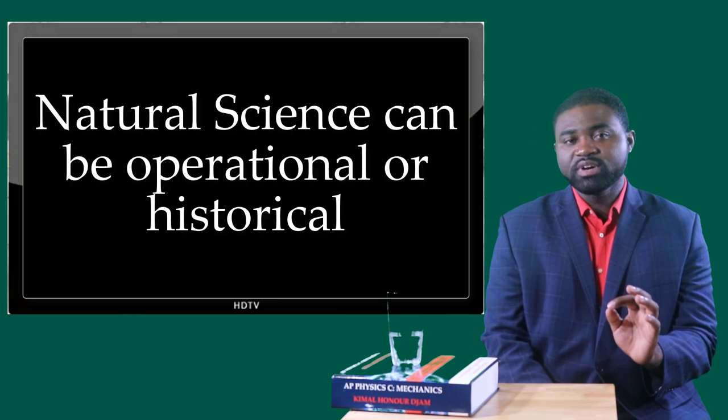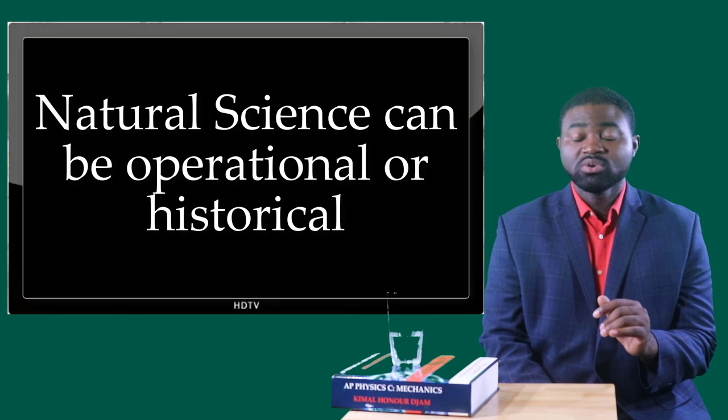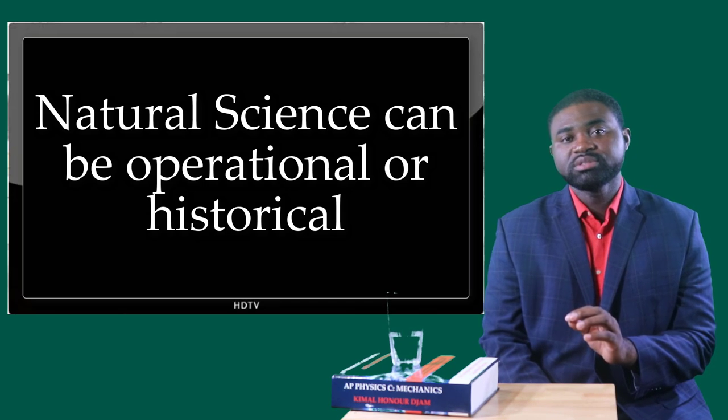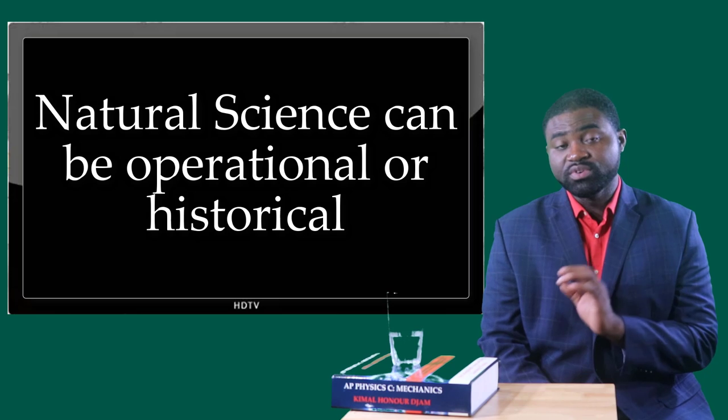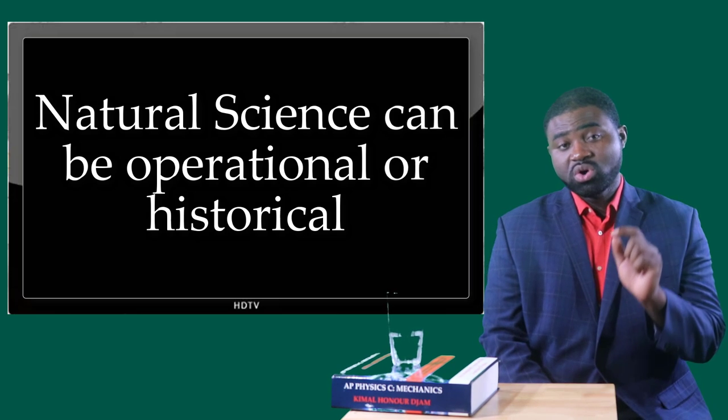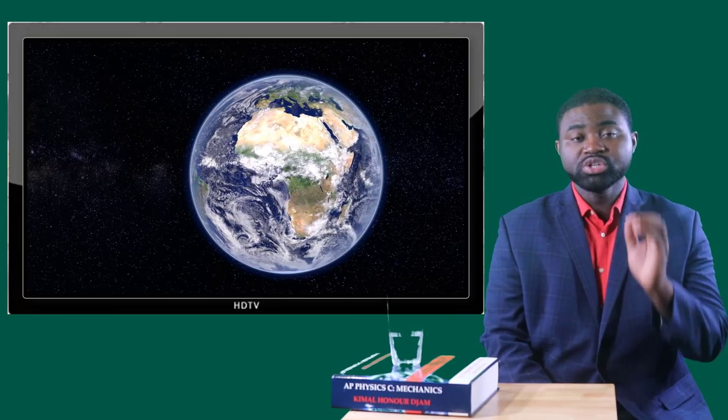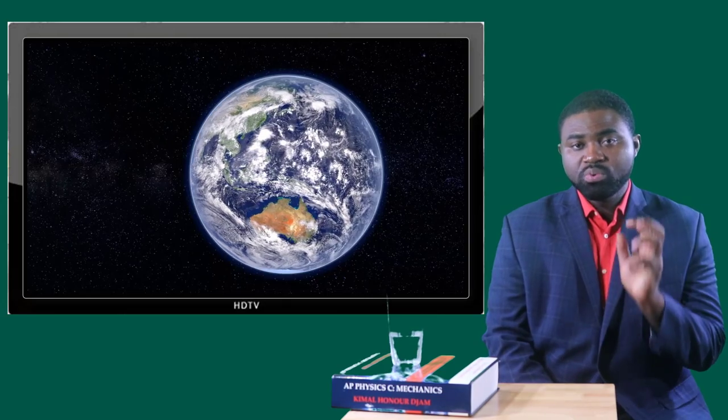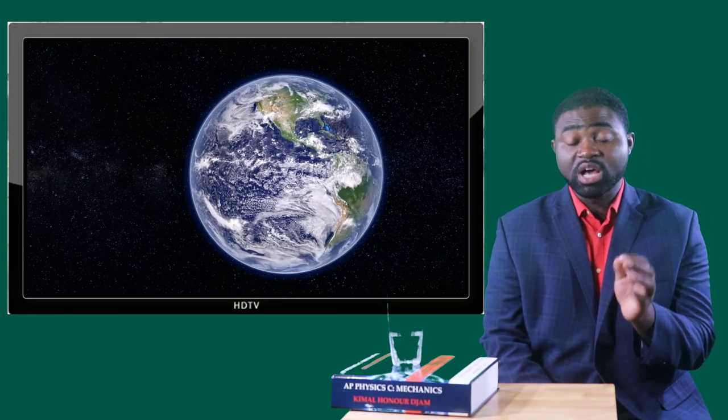What I'm saying is, technically, we can divide science into operational or observational or historical. Operational science is a systematic approach to understanding the universe that uses observable, testable, repeatable, and falsifiable experimentations to understand how nature works. In other words, observational science or operational science helps us to understand the laws, the theories that govern how things work.